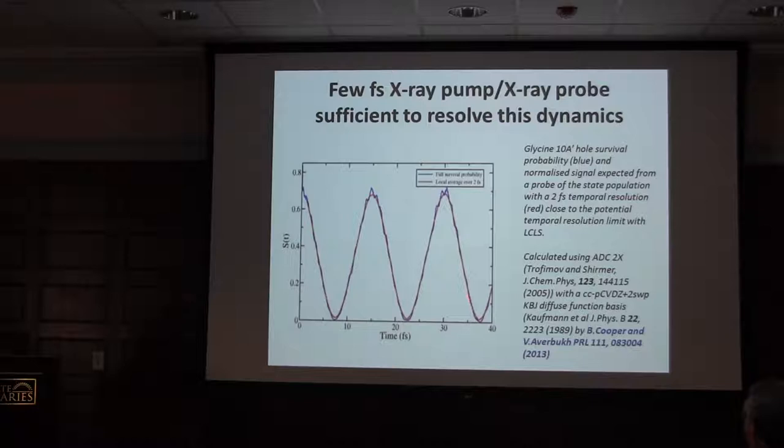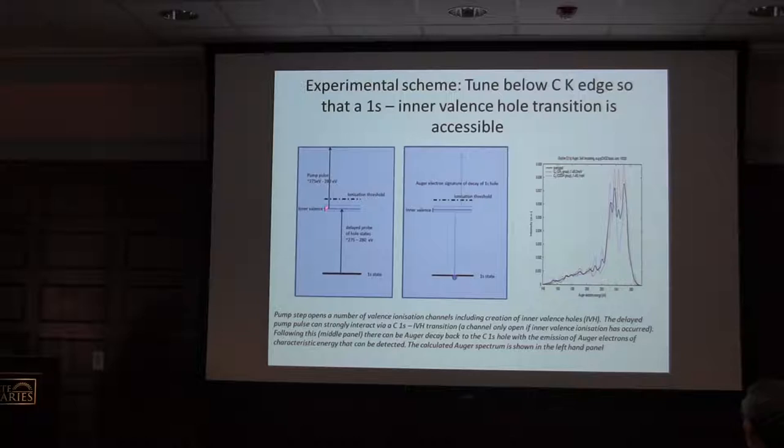When you do the calculation, you see that survival probability of that hole in glycine is happening with an oscillation period of about 15 femtoseconds. So with a few femtosecond time resolution, in principle, you should be able to pick that up with a free electron laser running either with a split and delay mode or in an emittance spoiler mode with these two pulses. Basically going back to the idea of using the fact that you can open up a hole using the first pulse or photons.